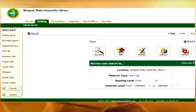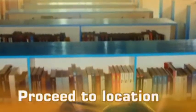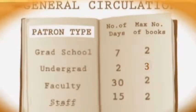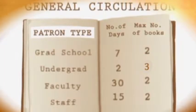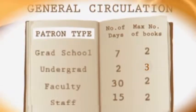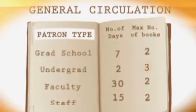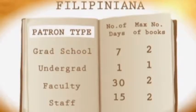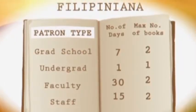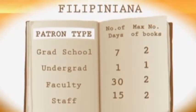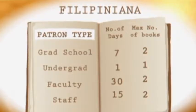Library resources loaning system: First, search the call number, title or author of the book from the OPAC or the Online Public Access Catalog. Then proceed to the section where the book is located. If you want to check it out, go to any charging counter for proper checking out. Loaning is from 2 p.m. onwards anytime for graduate students, staff and faculty. For general circulation books, the maximum checkout is 3 books per user. A graduate school student must return it in 7 days, undergraduate student in 2 days, faculty member in 30 days, and staff in 15 days. For Filipiniana books, faculty members, staff and graduate school students can loan a maximum of 2 books, while undergraduate students can loan one book only. Undergraduate students should return it in 1 day while 2 days for the other patron types.